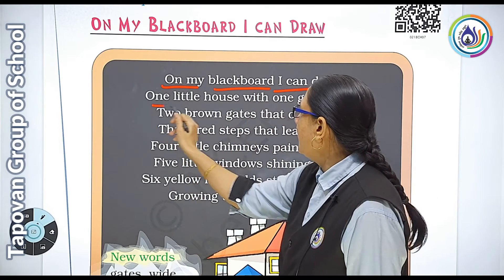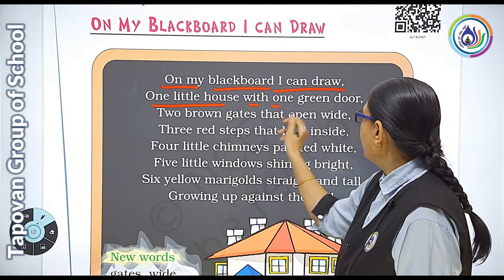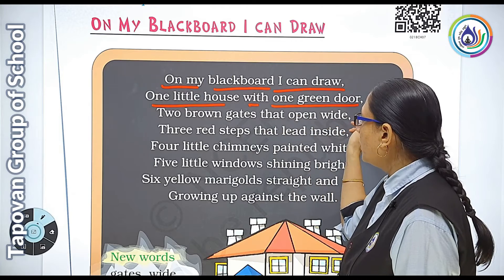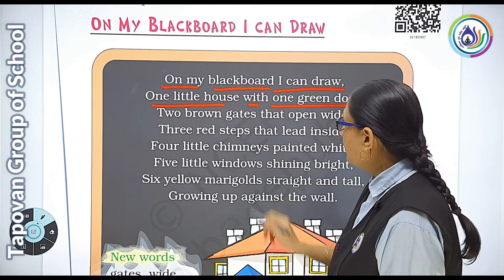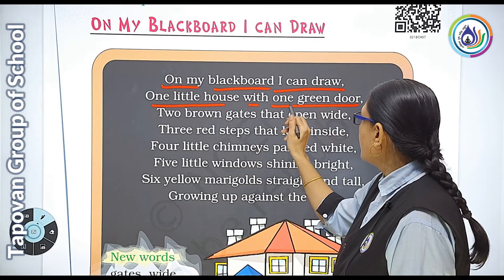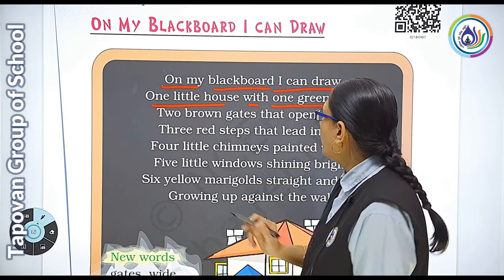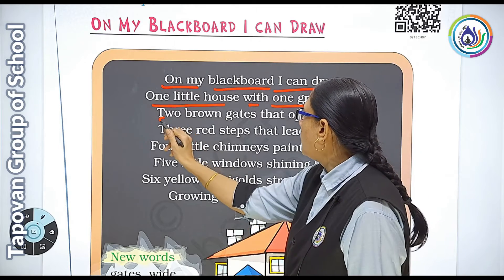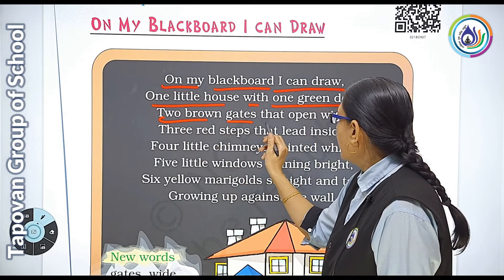One little house with one green door. Mein kya draw kar sakta hoon? Toh eek house, aur uspe green color ka one door.